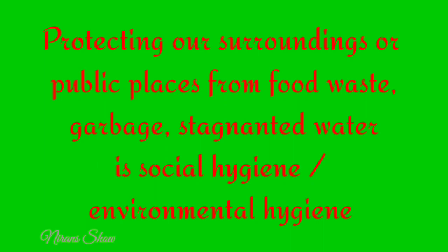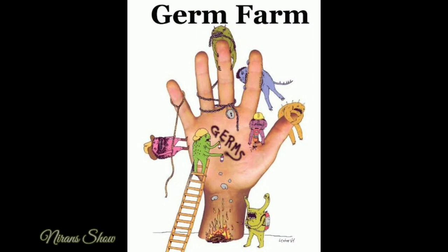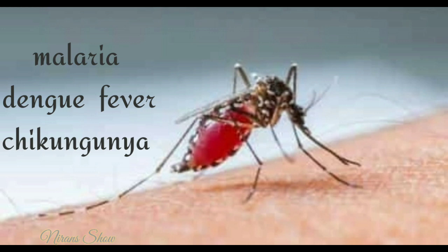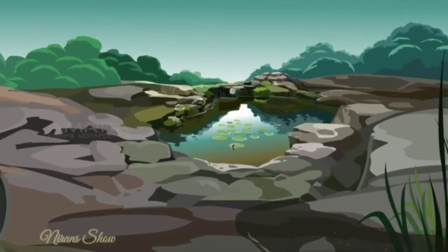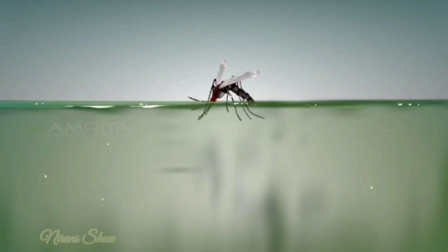When we don't clean ourselves and our surroundings, many microorganisms can spread and cause many diseases. Mosquitoes spread diseases like malaria, dengue fever, and chikungunya. Let's observe how it spreads. The mosquito's life cycle starts with laying eggs — it lays eggs on stagnant water and other containers that can hold water, such as discarded tires, cans, and buckets.